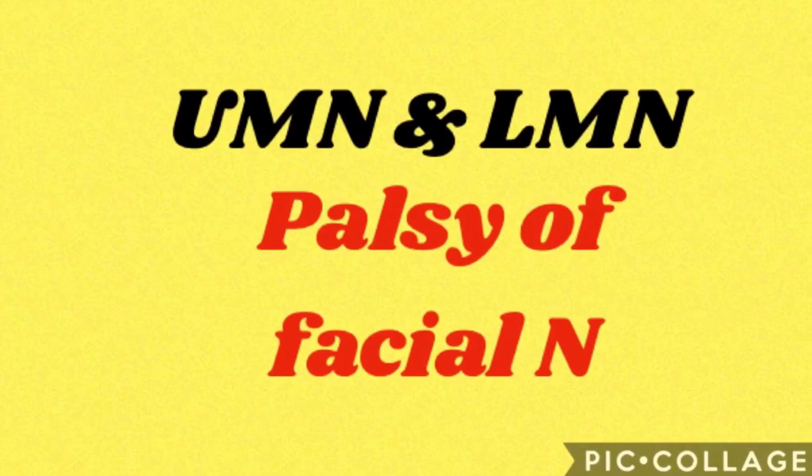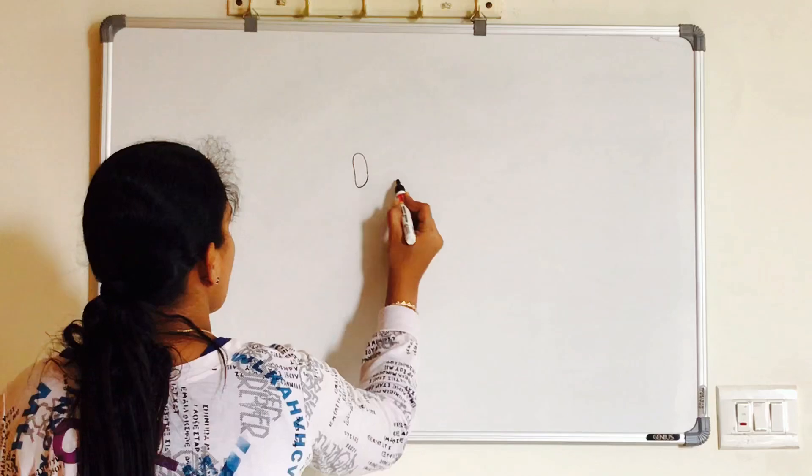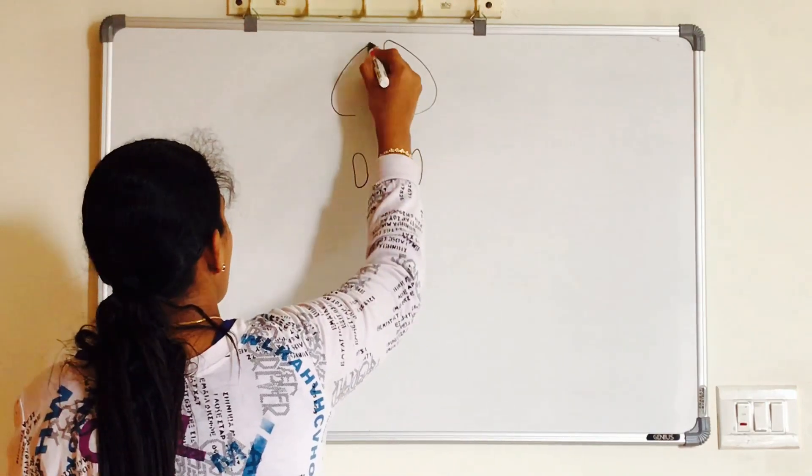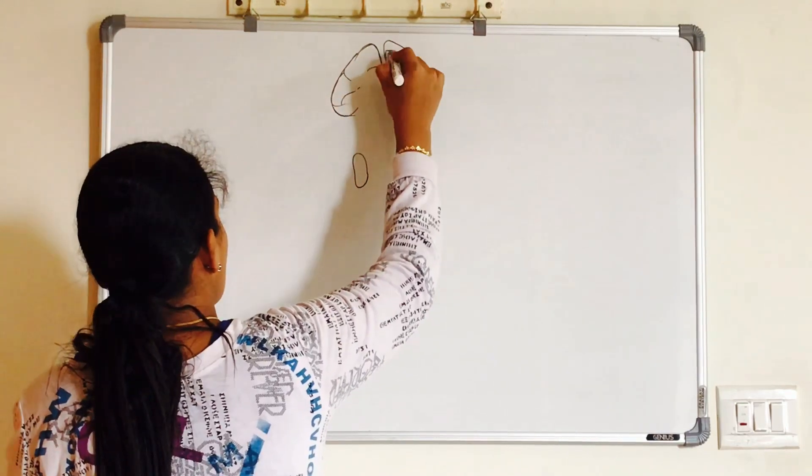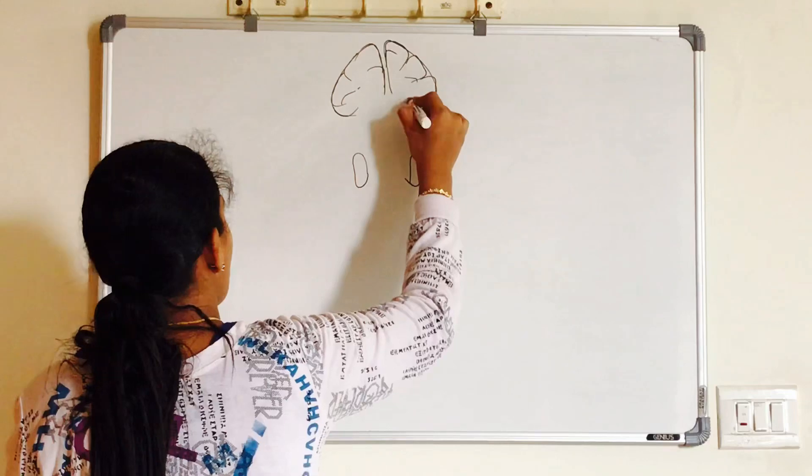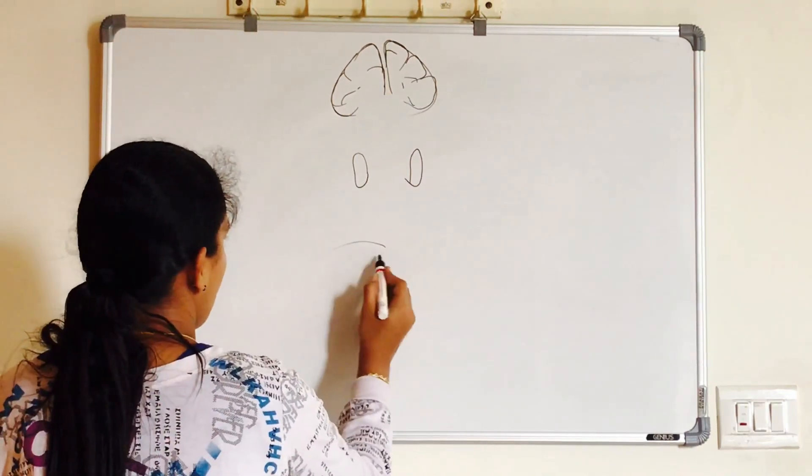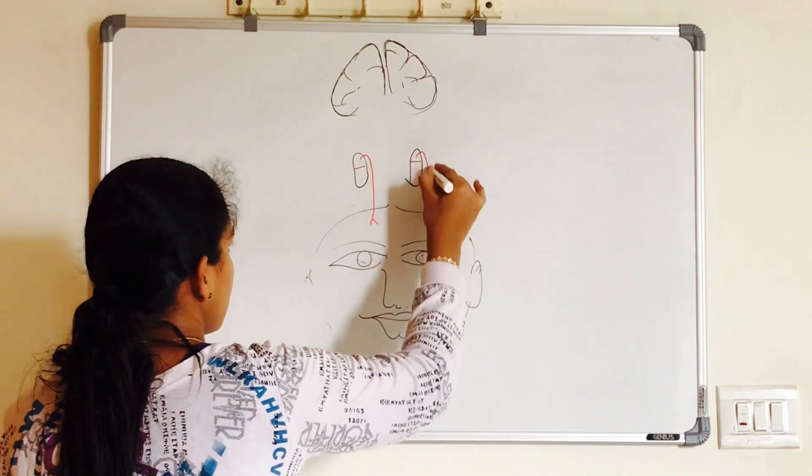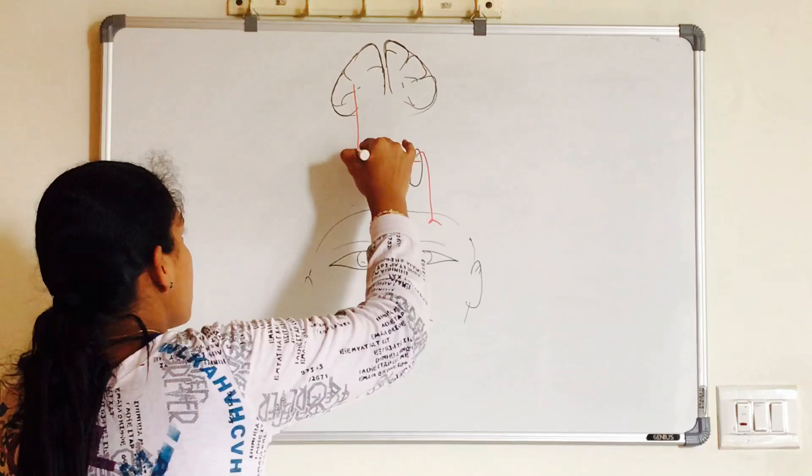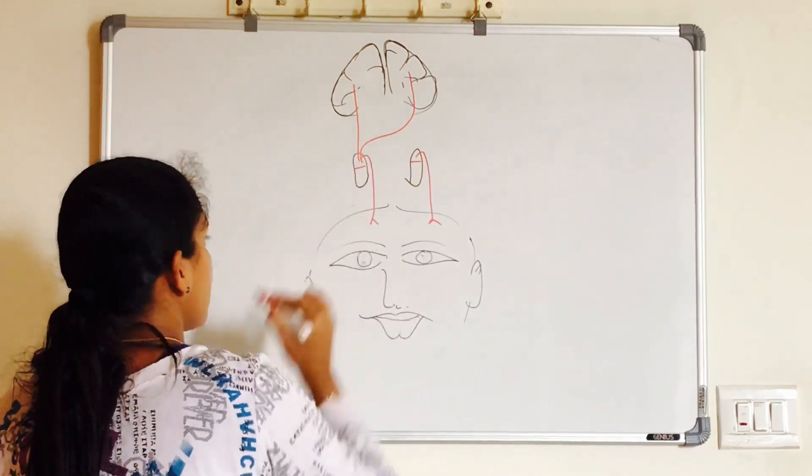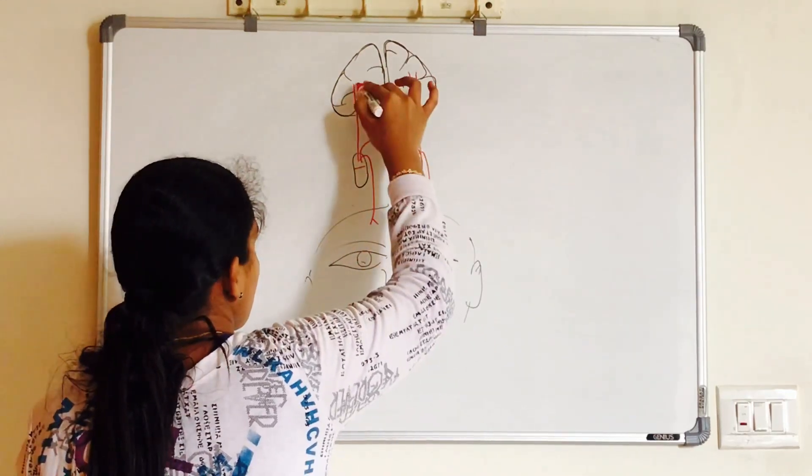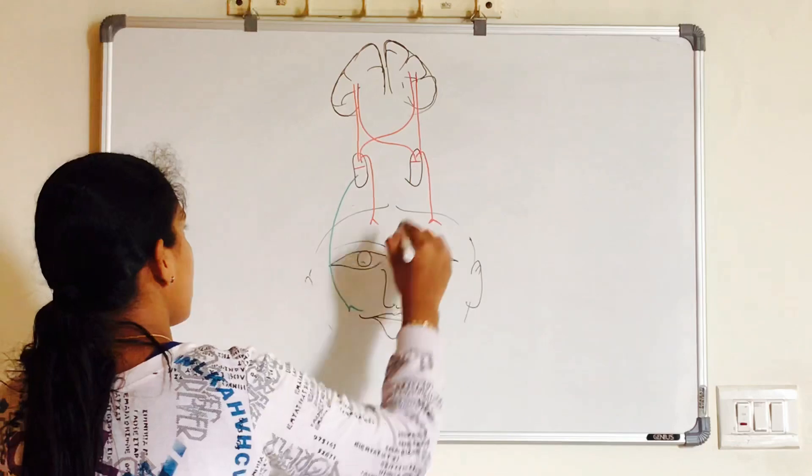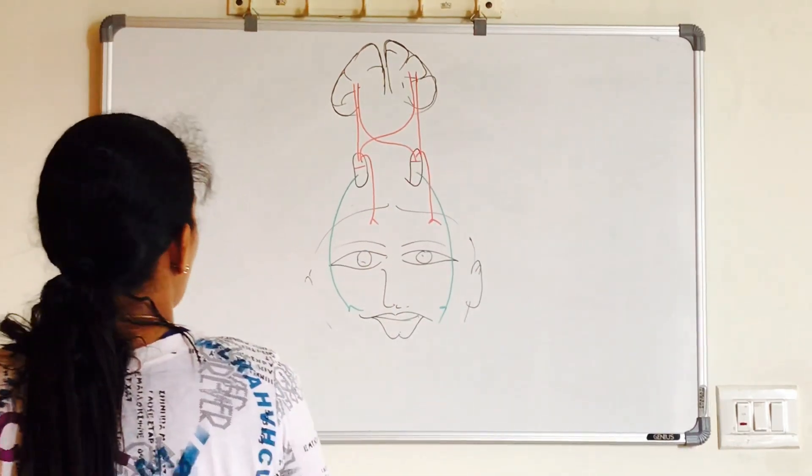Now, let's move on to the lesion of facial nerve. These are the motor nucleus of facial nerve and this is the cerebral cortex on right and left side. Part of nucleus which supplies the upper part of the face receives fibers that is corticonuclear fibers from both sides. Part of nucleus which supplies the lower part of the face receives corticonuclear fibers only from the opposite side cortex.